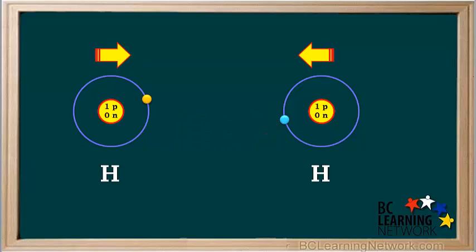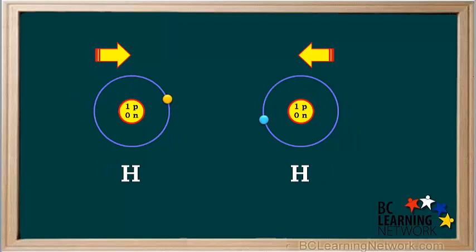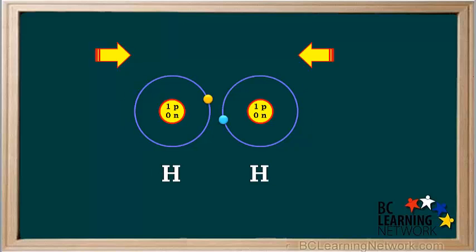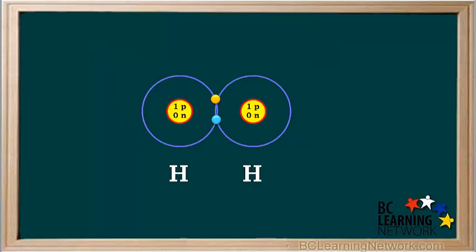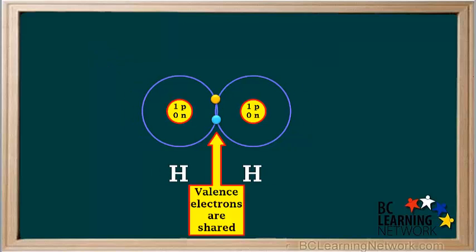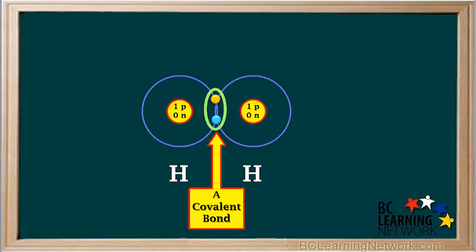Let's see what happens as these two hydrogen atoms approach each other. Here's what we get. At this point, the two valence electrons are equally shared between the two hydrogen atoms. These shared electrons form a bond between the two hydrogen atoms. It is called a covalent bond.